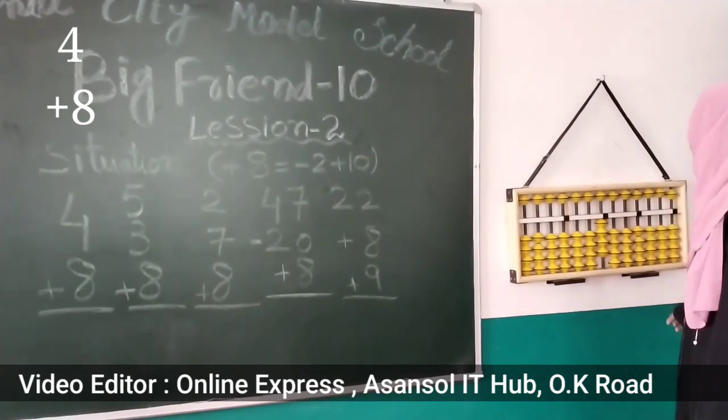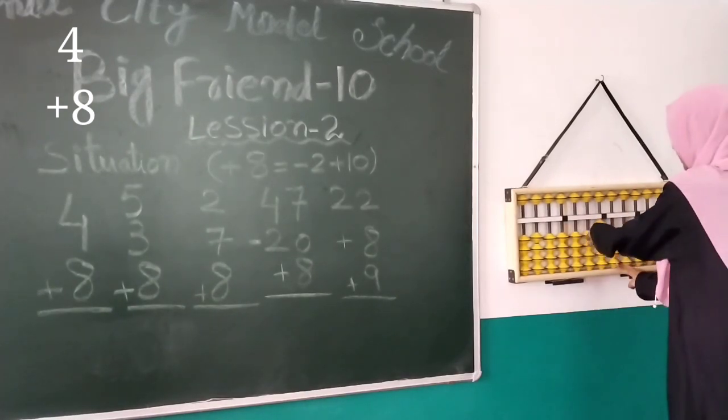What is our first sum? 4 plus 8. As we all know, 4 with thumb plus 8, we don't have enough beads. What will we do? We will ask Big Friend 10 to help. Big Friend's condition is, what must you do first? Break up with your best friend. So 8 breaks up with 2, then Big Friend arrives. The answer is 12.